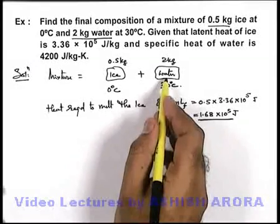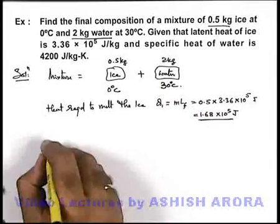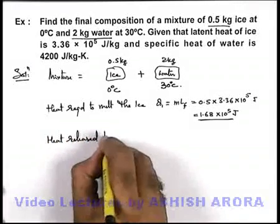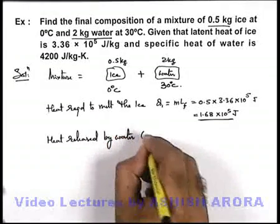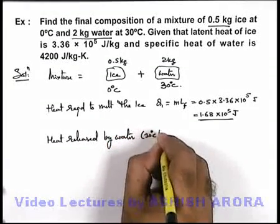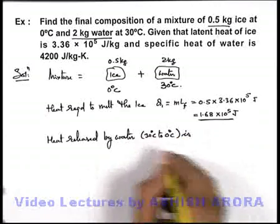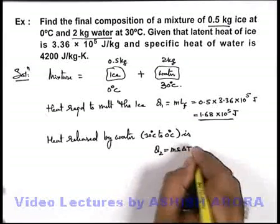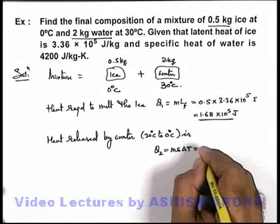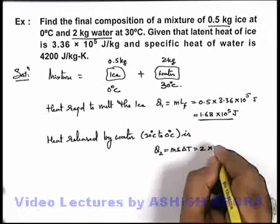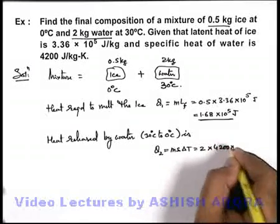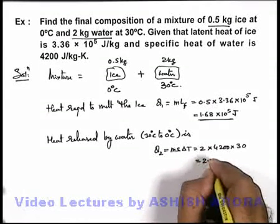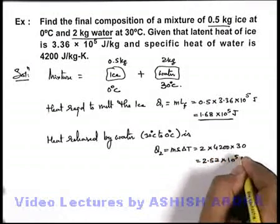Now let's analyze how much heat will be released by water. From 30°C to 0°C, we analyze it as Q2. This will be msΔT, so this will be 2 × 4200 × 30. On calculation, this will give us 2.52 × 10^5 joules.